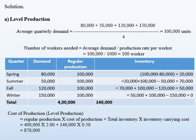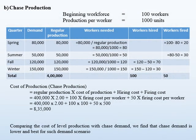For chase production, as the name suggests, we chase the demand and produce items according to demand through hiring and firing of workers. We prepare a table as shown. For spring, the demand forecast is 80,000, so we produce exactly 80,000 units. Number of workers needed is 80,000 divided by 1,000, which is 80 workers. We have a beginning workforce of 100, so we fire 20 workers.